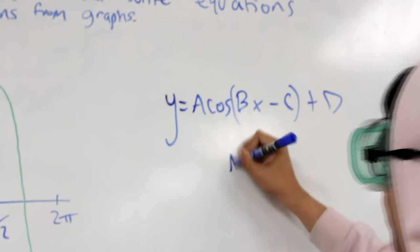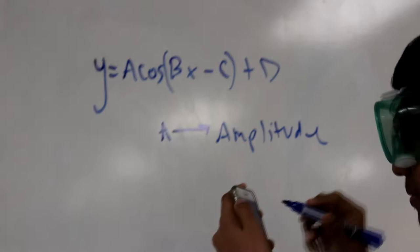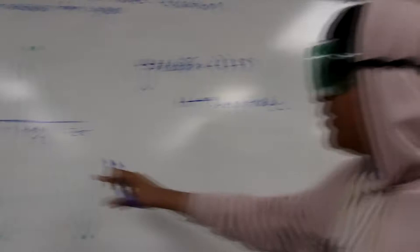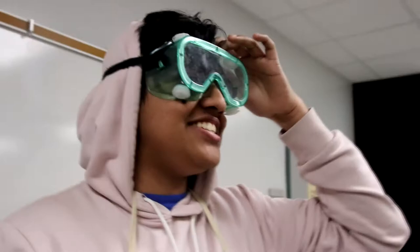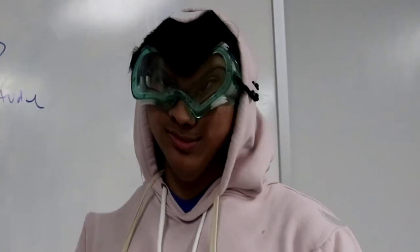So A actually represents the amplitude. I'll just write that here. So you're also going to have a lot of attributes with this graph. You're actually going to have a period too. Okay, I need to explain these terms, dude. I can't do this. I need to have like a set definition. Stop recording.